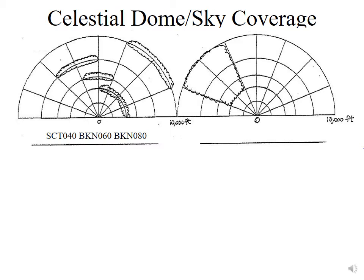The next cloud layer is at 8,000 feet, adding one more quadrant to give six-eighths coverage — also broken, BKN 080. We also have a cloud deck at 10,000 feet, but from the observer's standpoint those quadrants are already filled and you can't see that deck from the surface anyway, so it doesn't add to our celestial dome coverage and doesn't show up in our description.